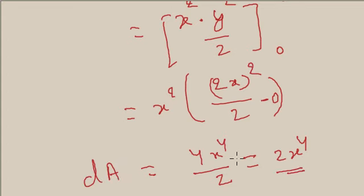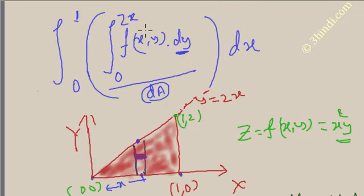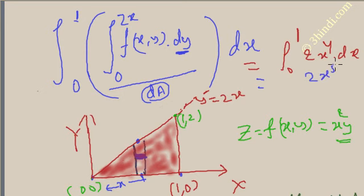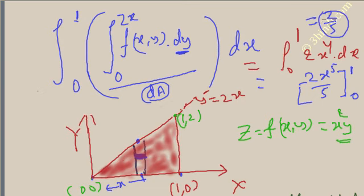So dA equals 2x to the power 4. Substituting into the outer integral, you get the integral from 0 to 1 of 2x to the power 4 dx. Integrating gives 2x to the power 5 divided by 5, evaluated from 0 to 1, which equals 2 over 5. So 2/5 is the answer of the double integration.